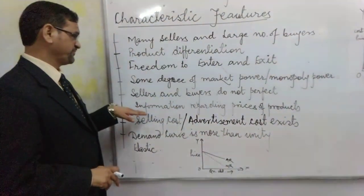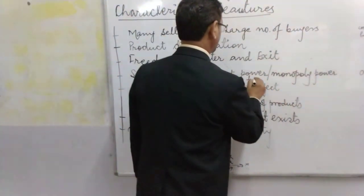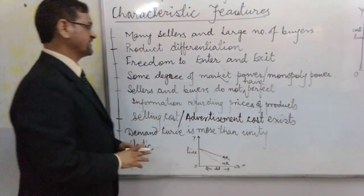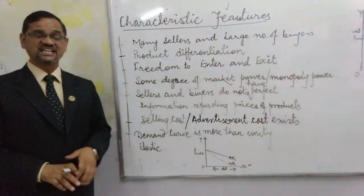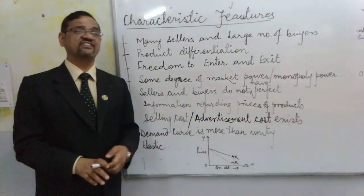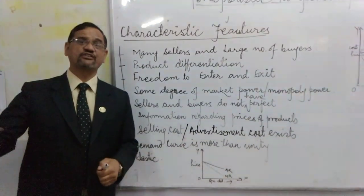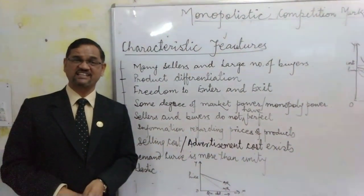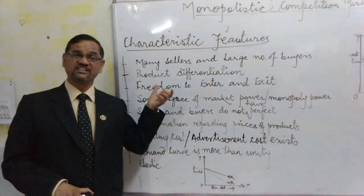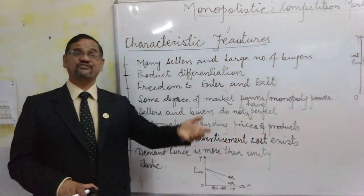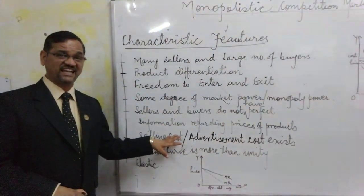Sellers and buyers do not have perfect information regarding the prices of products. For example, if I am going to a particular shop and purchasing something for 10 rupees, I didn't even make an attempt to go to another shop to find out if it is available for 8 rupees there. That information is not clear; the knowledge is not there with the buyers about what the actual price of the commodity is. At the same time, they get misled and cheated.